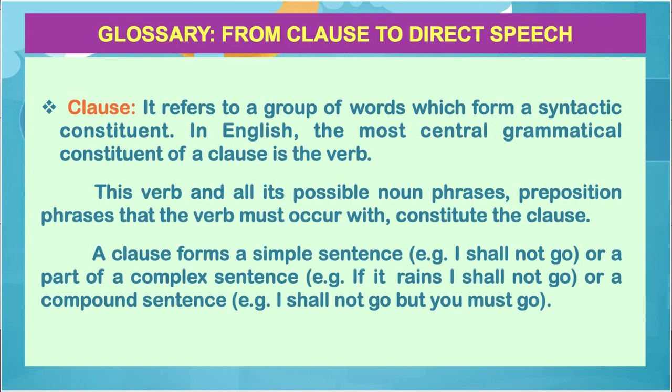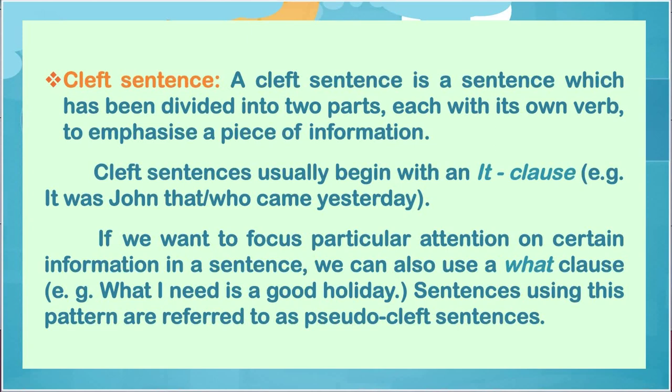Or a compound sentence — for example, 'I shall not go, but you must go.' Cleft sentence — a cleft sentence is a sentence which has been divided into two parts, each with its own verb to emphasize a piece of information. Cleft sentences usually begin with an 'it' clause — for example, 'It was John that/who came yesterday.' If we want to focus particular attention on certain information, we can also use a 'what' clause — for example, 'What I need is a good holiday.' Sentences using this pattern are referred to as pseudo-cleft sentences.